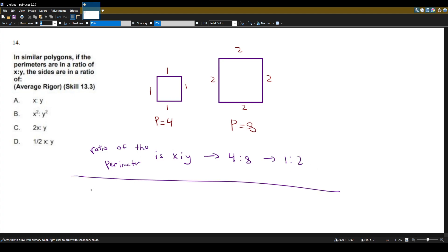Now let's think about the ratio of the sides. Well, the side of the small triangle is 1, and the side of the bigger triangle is 2. So we know 1 to 2 is just x, y. So the ratio of the sides is also just x to y.